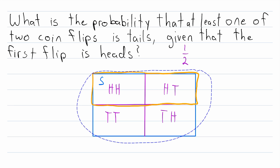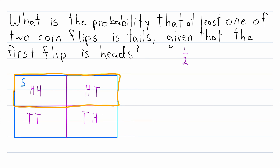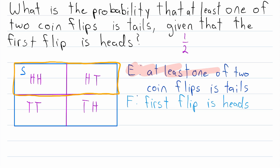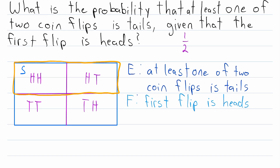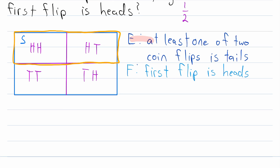After going through this example, you might be able to guess the general formula for conditional probability. Let's give names to the two events: E is the event that at least one of two coin flips is tails, and F is the event that the first flip is heads. What we just found was the probability of E given F, written as P(E|F). To the left of the vertical bar is the event we want the probability of, and to the right are the given conditions.